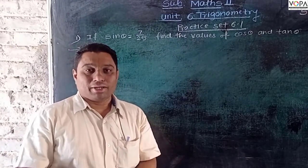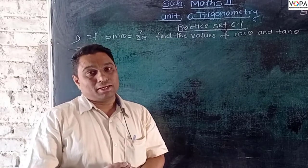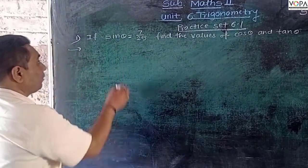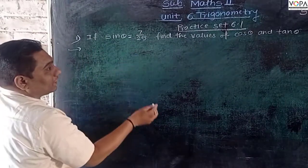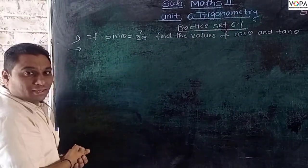So let's see how we can find out these values by using some basic formulas. The value of sin θ is given and we have to find cos θ.